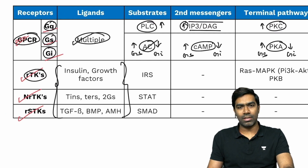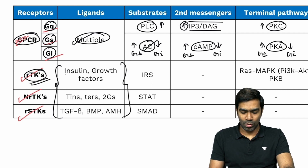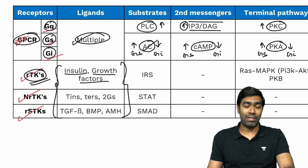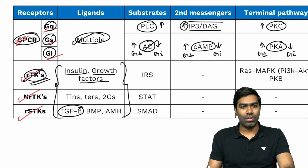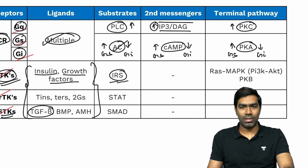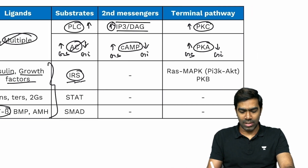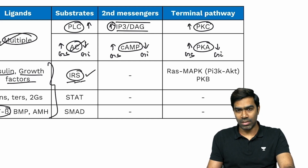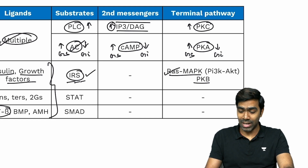RTKs — receptor tyrosine kinases — are mostly used by growth factors. Common examples include insulin, epidermal growth factor, platelet-derived growth factor, and fibroblast growth factor. The exception is TGF-beta, which acts via the RSTK pathway, not RTK. The substrate for RTKs is IRS (insulin receptor substrate). There is no distinct second messenger; IRS activates downstream pathways including the RAS/MAP kinase pathway and the PI3K/AKT pathway, also increasing protein kinase B activity.